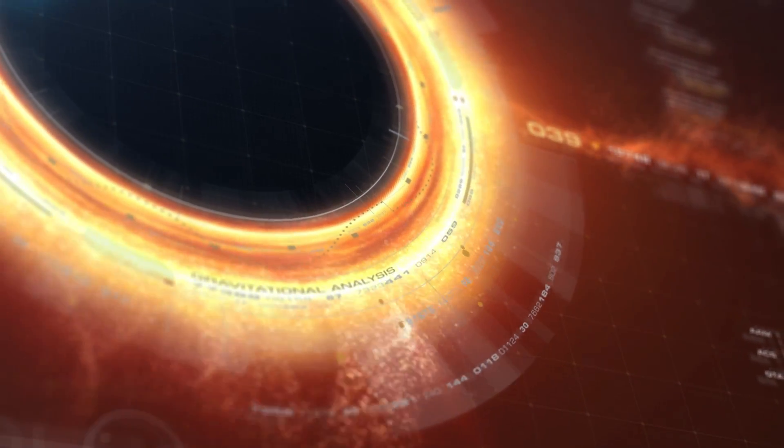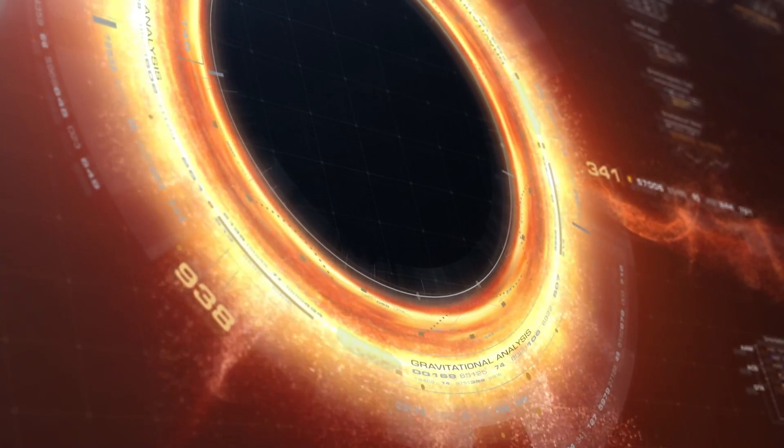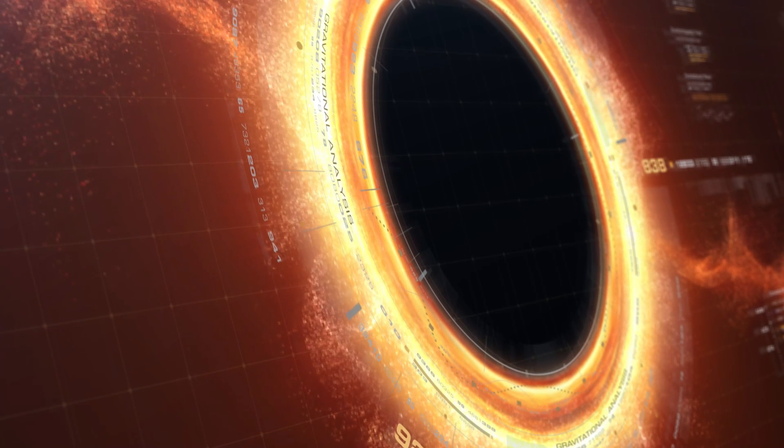However, once light reaches the event horizon, that's it. Once you get in, there's no way out. The event horizon acts as a membrane, but it's not something that you can touch or anything like that. It's a touchless sphere surrounding the black hole, and that's as close as we can get to a black hole.